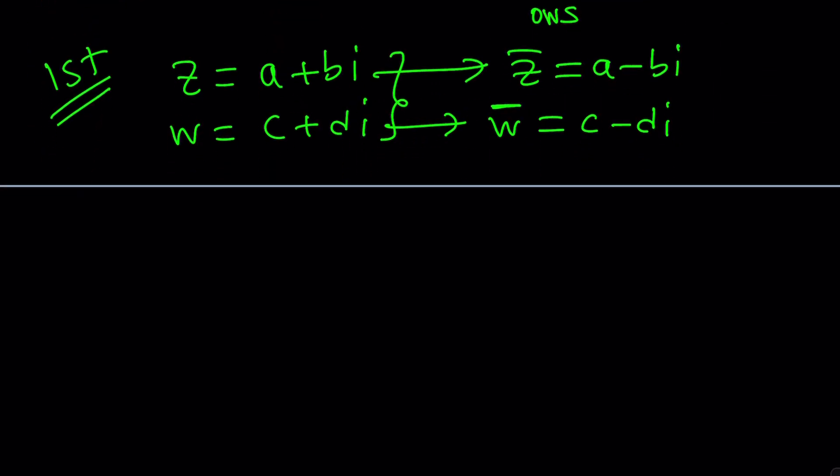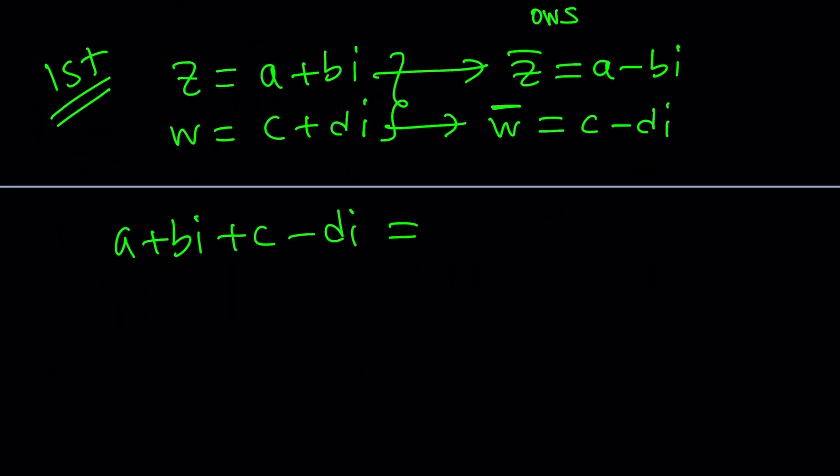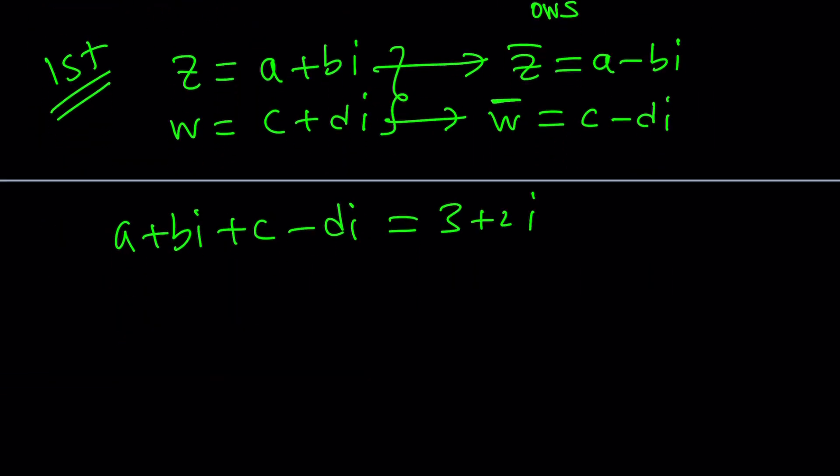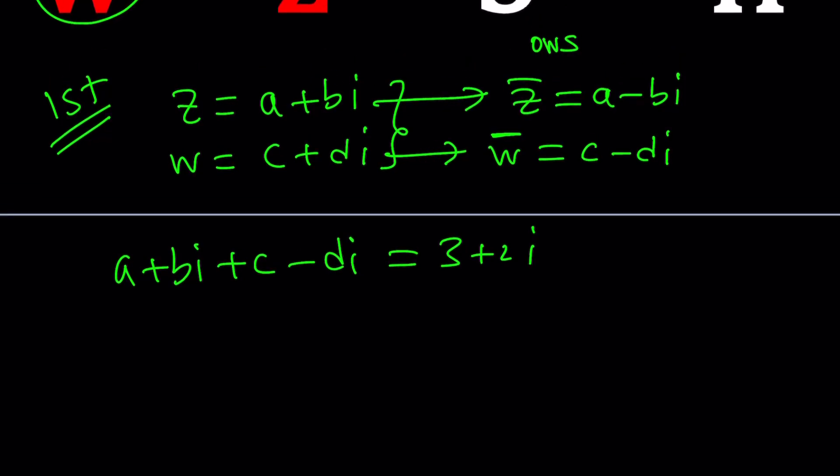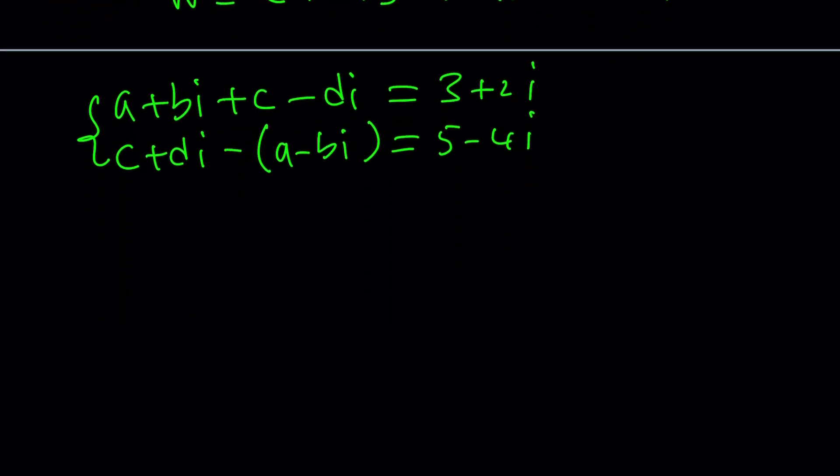Let's plug it in. Z plus W bar is going to be A plus B I plus C minus D I. That's going to give us 3 plus 2i. And then the second equation is W which is C plus D I minus A minus B I. And that's equal to 5 minus 4i. This is a system but we need to simplify it.